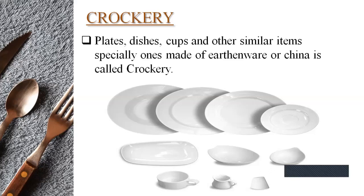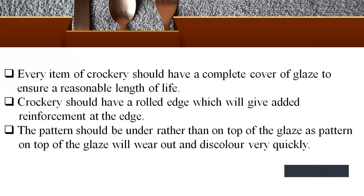This all comes under crockery. Now, while purchasing crockery, the following points we have to consider. The first point is every item of crockery should have a complete cover of glaze to ensure a reasonable length of life. The second point, crockery should have a rolled edge which will give added reinforcement at the edge. The third and last very important point: the pattern should be under rather than on top of the glaze, as a pattern on top of the glaze will wear out and discolor very quickly.